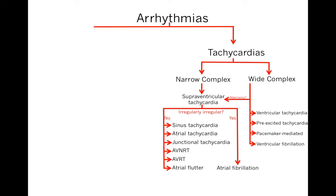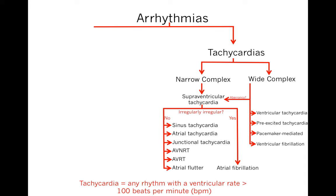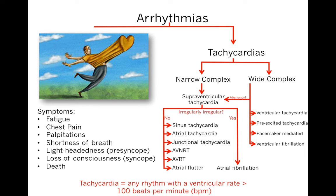We're moving on to the tachycardias. We like to break them down into narrow complex tachycardias and wide complex tachycardias. A tachycardia is any rhythm with a ventricular rate of more than 100 beats per minute. Symptoms include fatigue, chest pain, palpitations, shortness of breath, lightheadedness (also called presyncope), loss of consciousness (also called syncope), and sudden death.